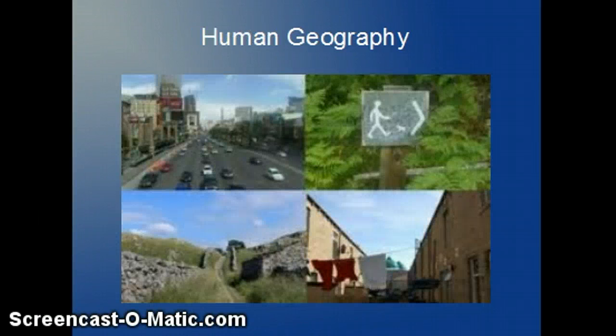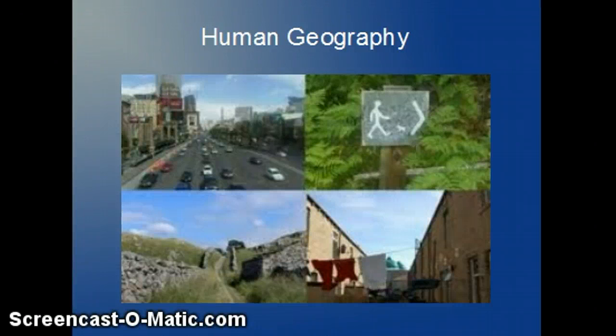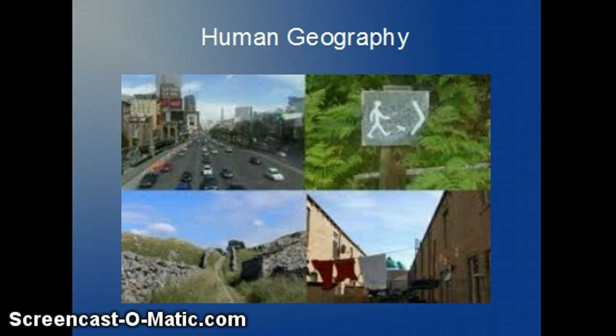While physical geography is focusing on the physical features of Earth, human geography involves studying human activities and how they relate to Earth. This branch of geography analyzes how people interact with the environment, including how they adapt to and also change the surrounding land. Human geography also includes studying patterns of human settlement, movement, and cultural development, which is largely the focus of our course.